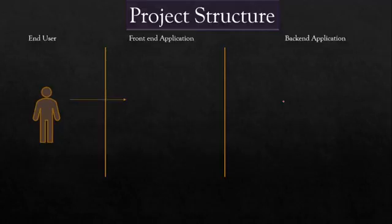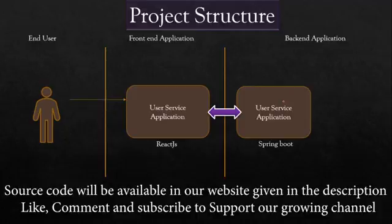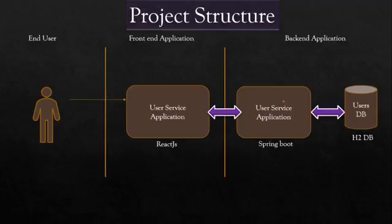Now let's look at the project structure. Our project is divided into three parts: the backend, the frontend that is ReactJS, and an end user who is going to use this application. When the end user makes a request, he will get a UI — that is our user service application — which will fetch data from the backend. The backend is a Spring Boot application that fetches data from an H2 database, transfers it to the user service application, which then transfers it to the end user.